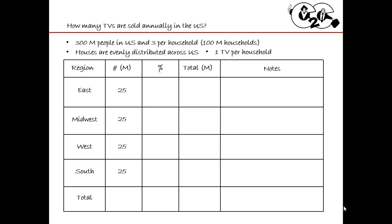On the East Coast, we have 25 million households. These people are usually very busy at night, so they probably don't care that much about TV and aren't really buying a new one annually. I'm going to say only 20%. I know two times 25 is five, so the total for the East Coast is 5 million.